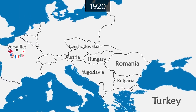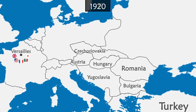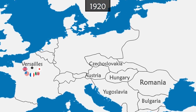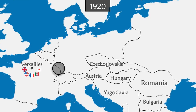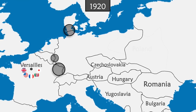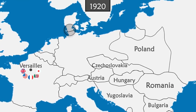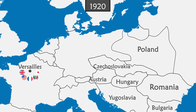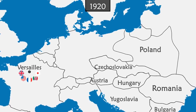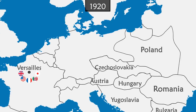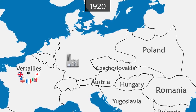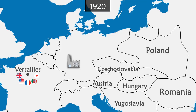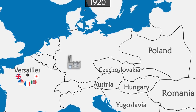Germany's army is disbanded and its colonies shared among the Allies. The country cedes roughly 15% of its territory to France, Belgium, Denmark and Poland, which is recreated. The only consolation is that Germany remains largely intact due to no fighting on its territory and its industry is still standing. Nevertheless, the humiliation imposed upon Germany already leaves it with a desire for revenge.